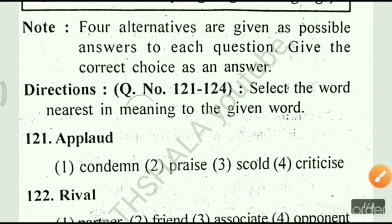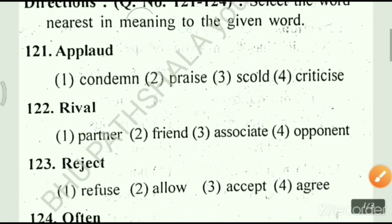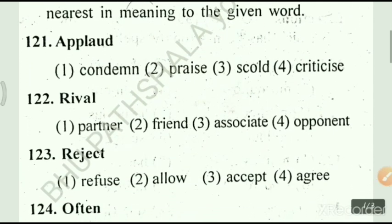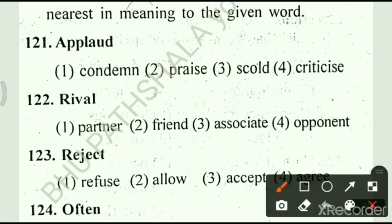Our next question is question number 122: rival. Our options are: option number 1, partner; option number 2, friend; option number 3, associates; option number 4, opponent. Our answer for this question is option number 4, opponent.